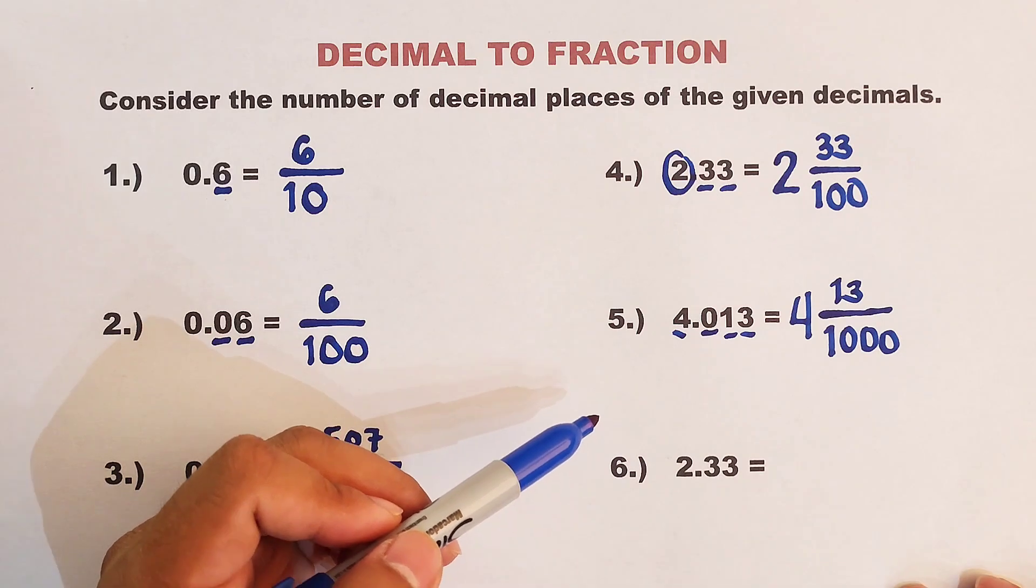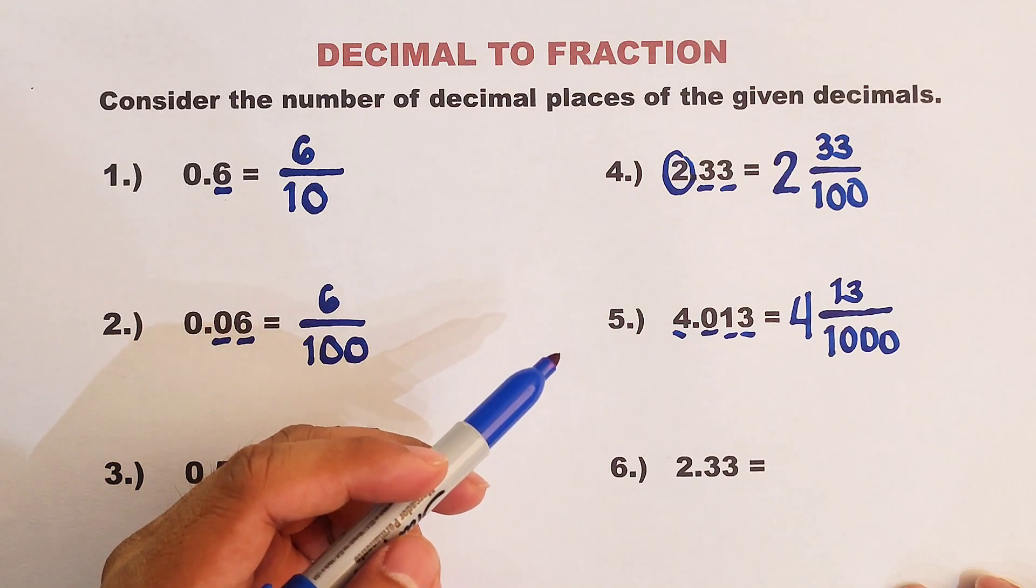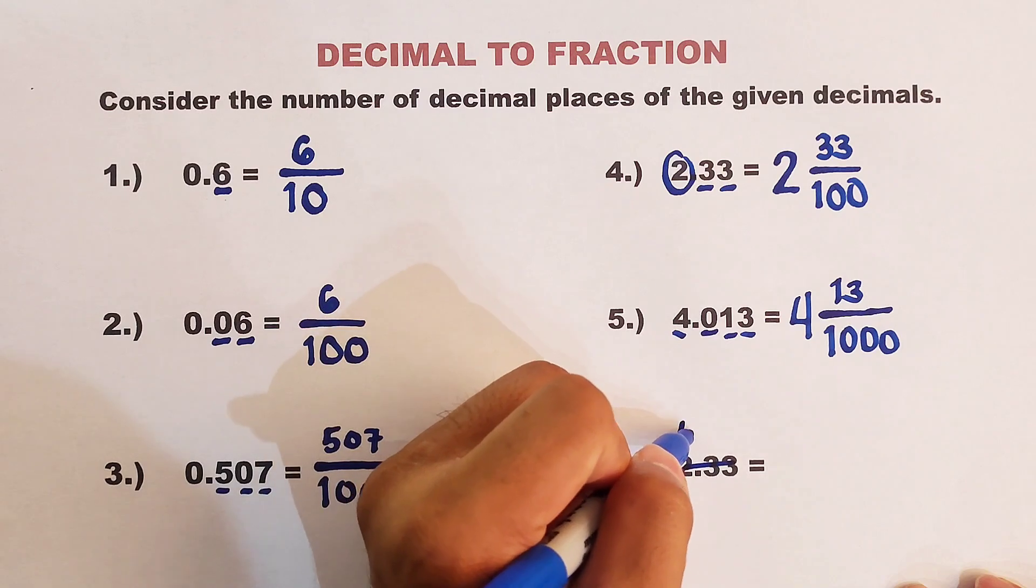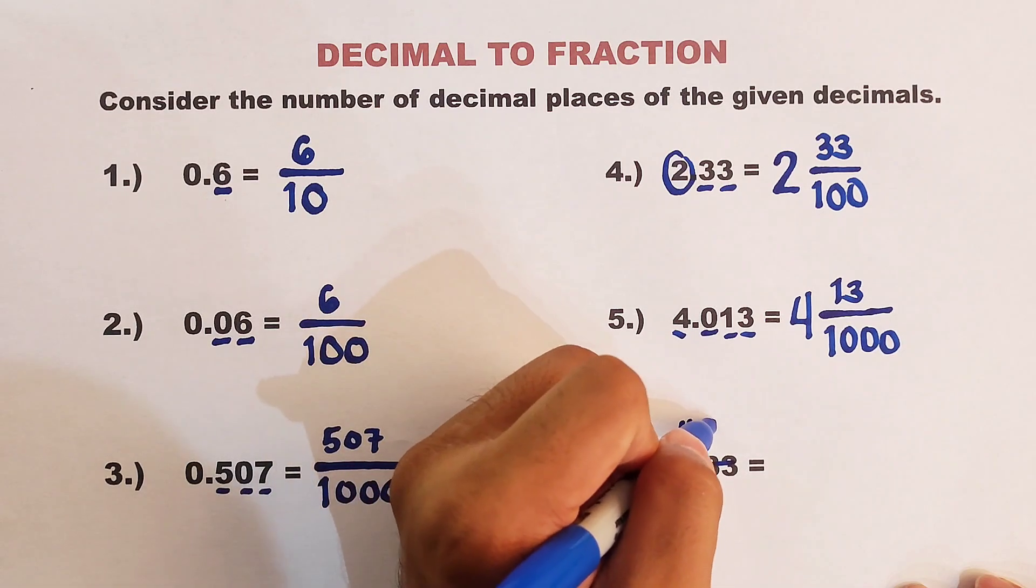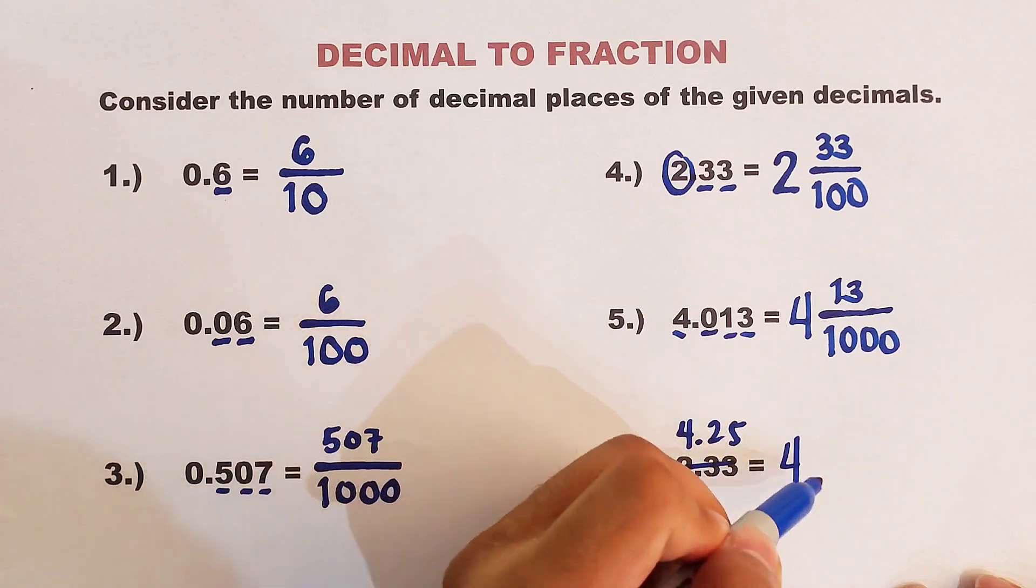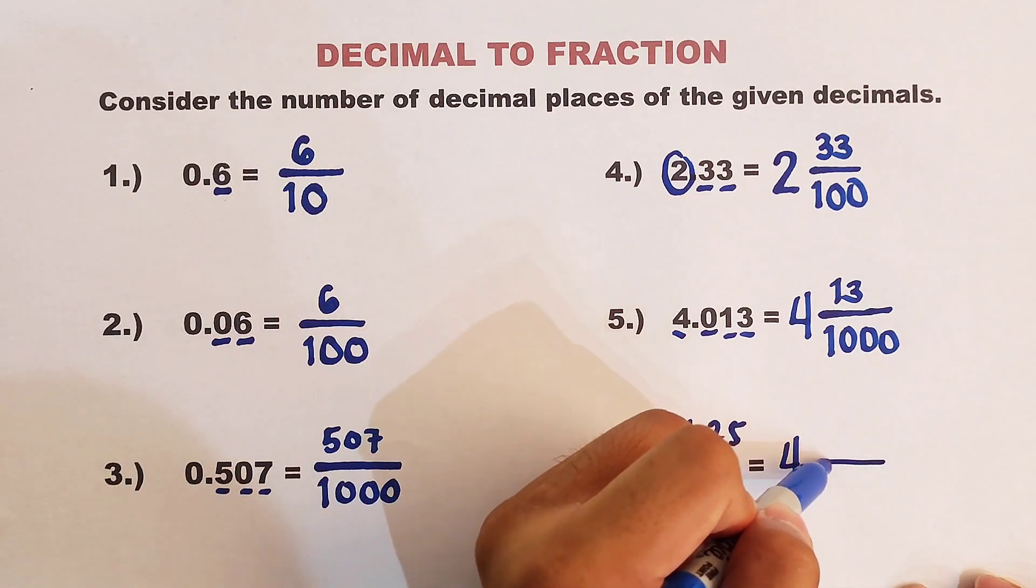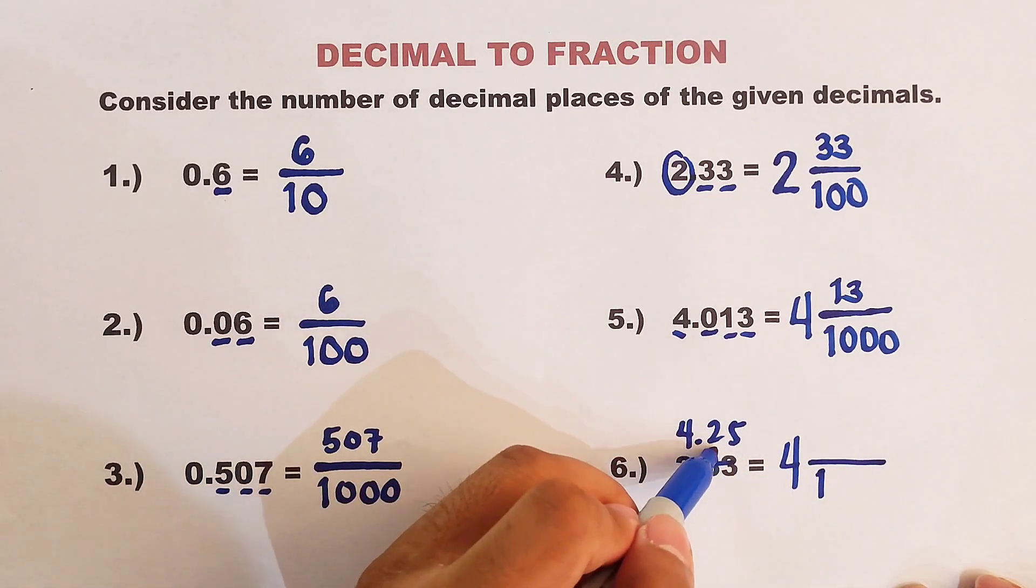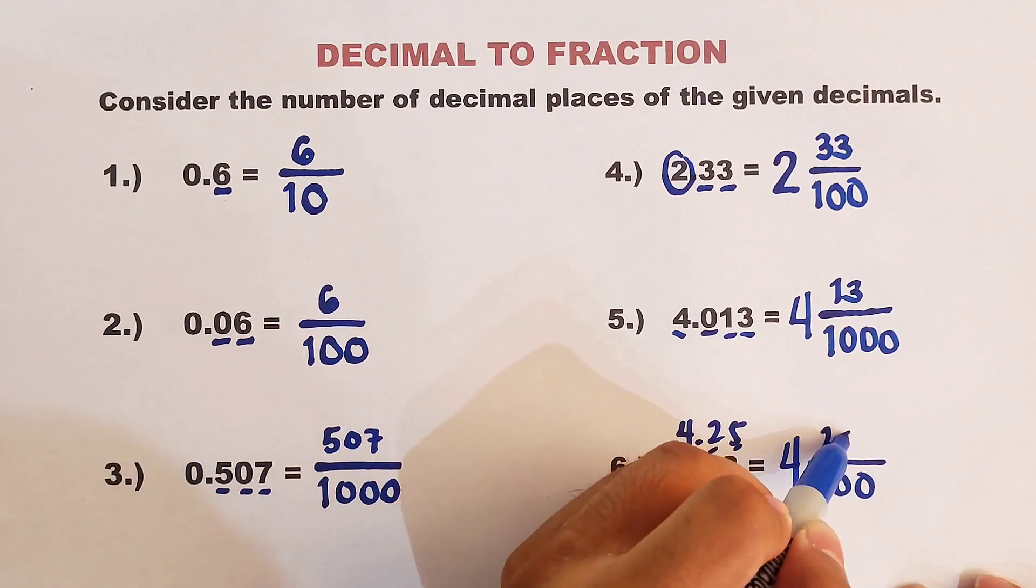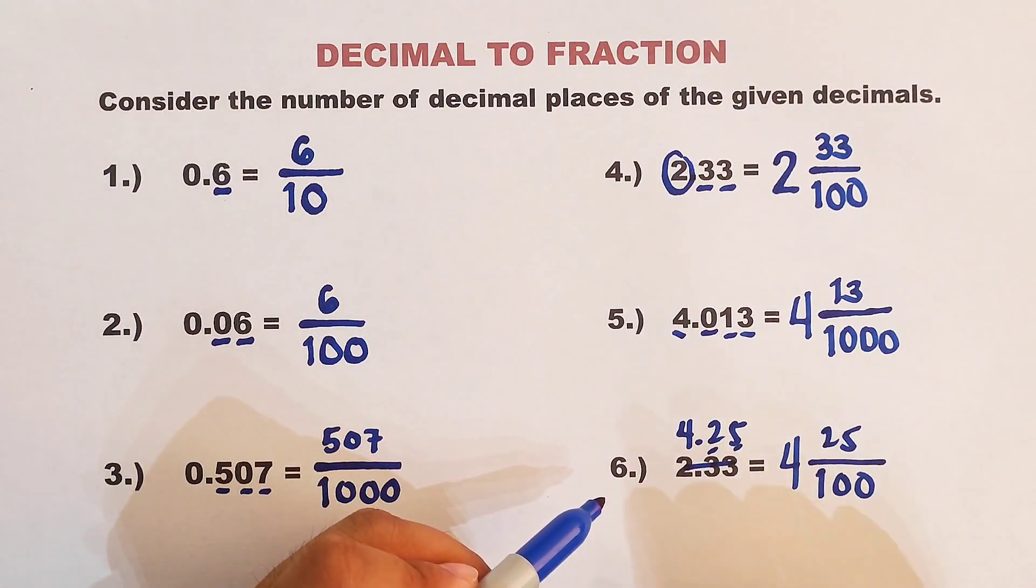Let's continue with number 6. I will give you a correction here. Let's try 4.25. So we will put here the whole number and then 1 here. We have 1 and 2 decimal places, so 2 zeros. Copy 25. And this is the answer, 4 and 25 over 100.